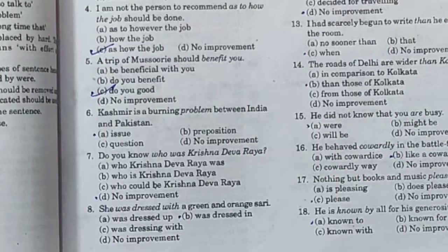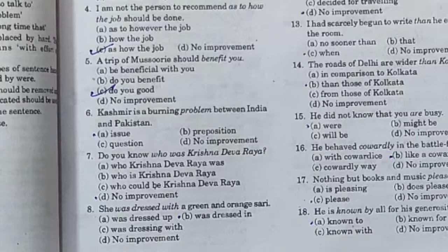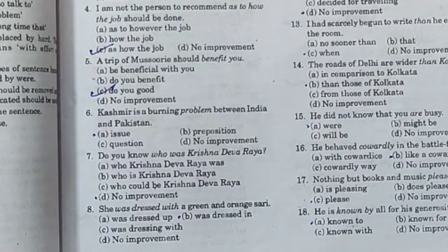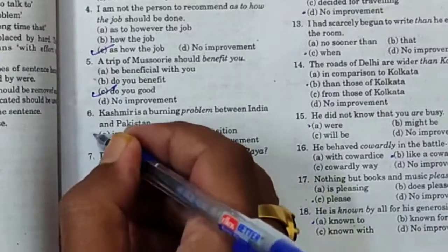Now sentence number 6: 'Kashmir is a burning problem between India and Pakistan.' Option A: issue. Option B: preposition. Option C: question. Option D: no improvement. Kashmir is a burning issue, not problem, between India and Pakistan. So 'problem' is replaced by 'issue', and option A is our correct answer.